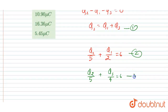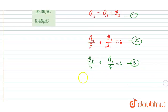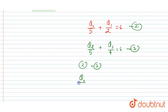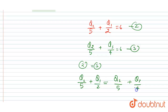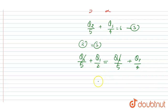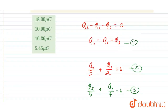Write this as equation 1, equation 2, and equation 3. We can equate equation 2 and equation 3 since both equal 6: q2 by 5 plus q1 by 2 equals q2 by 5 plus q3 by 4. The q2 by 5 cancels out, giving us 2q1 equals q3.